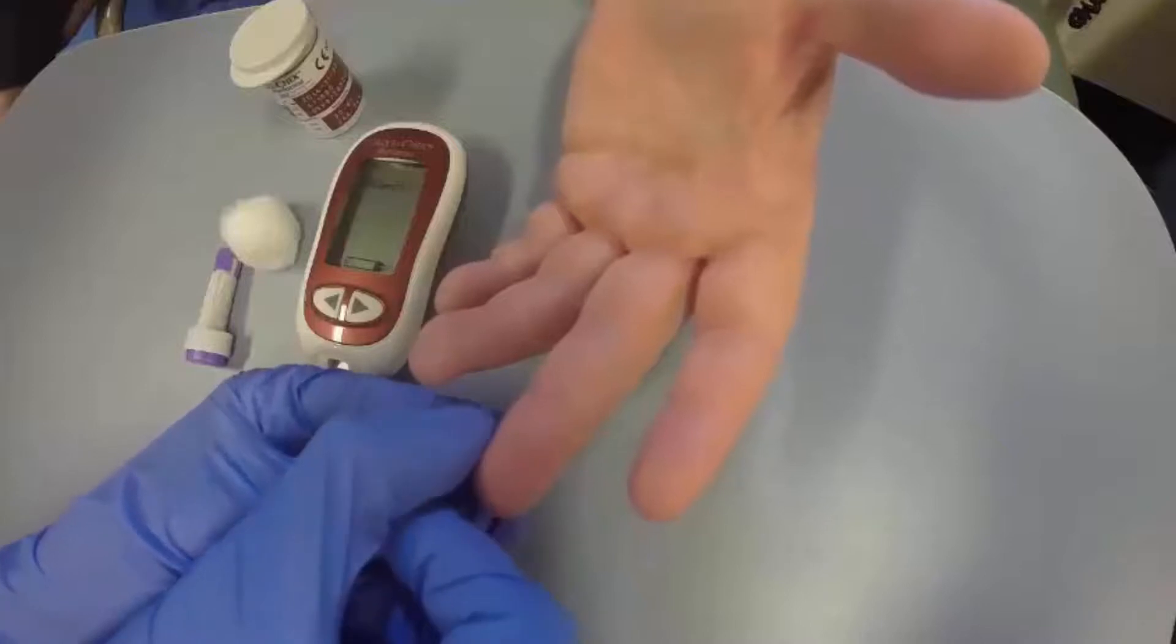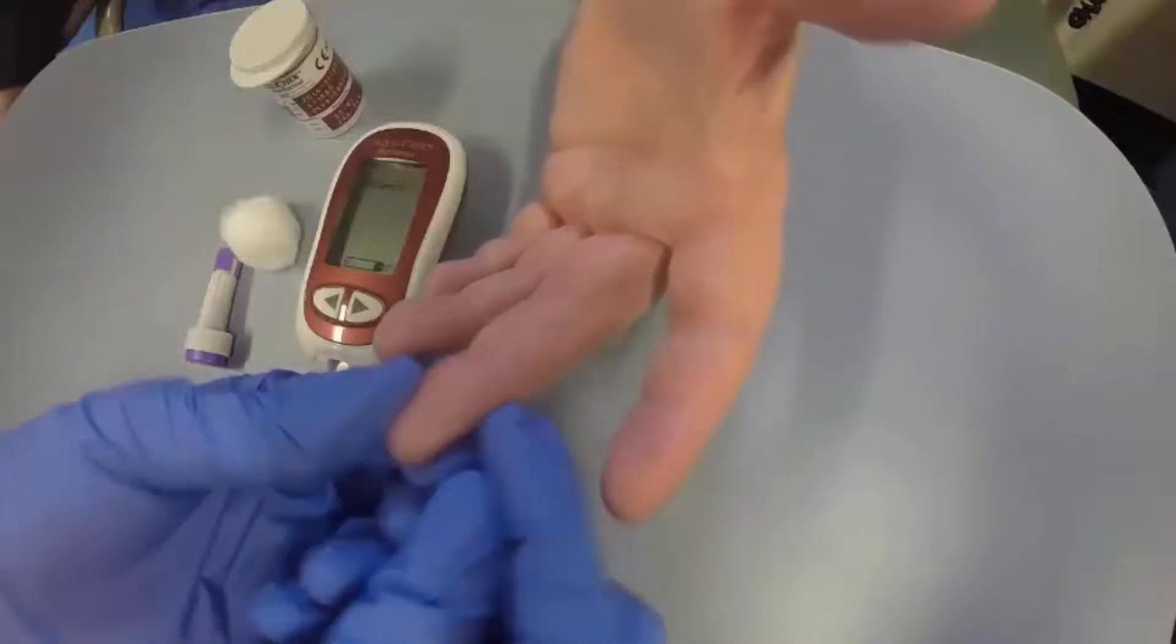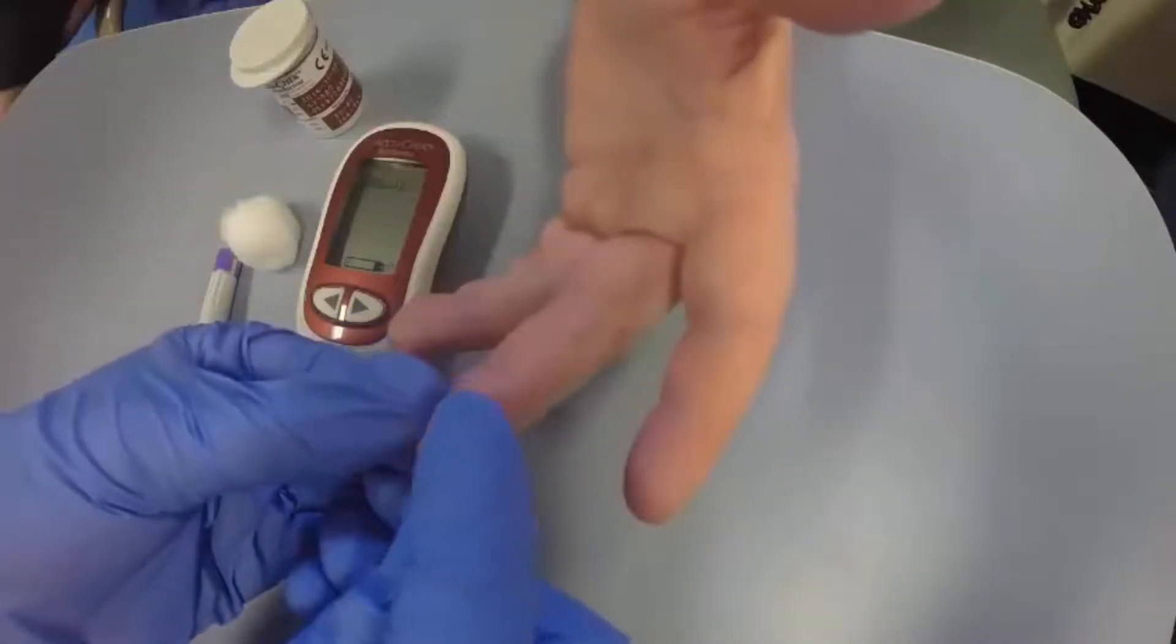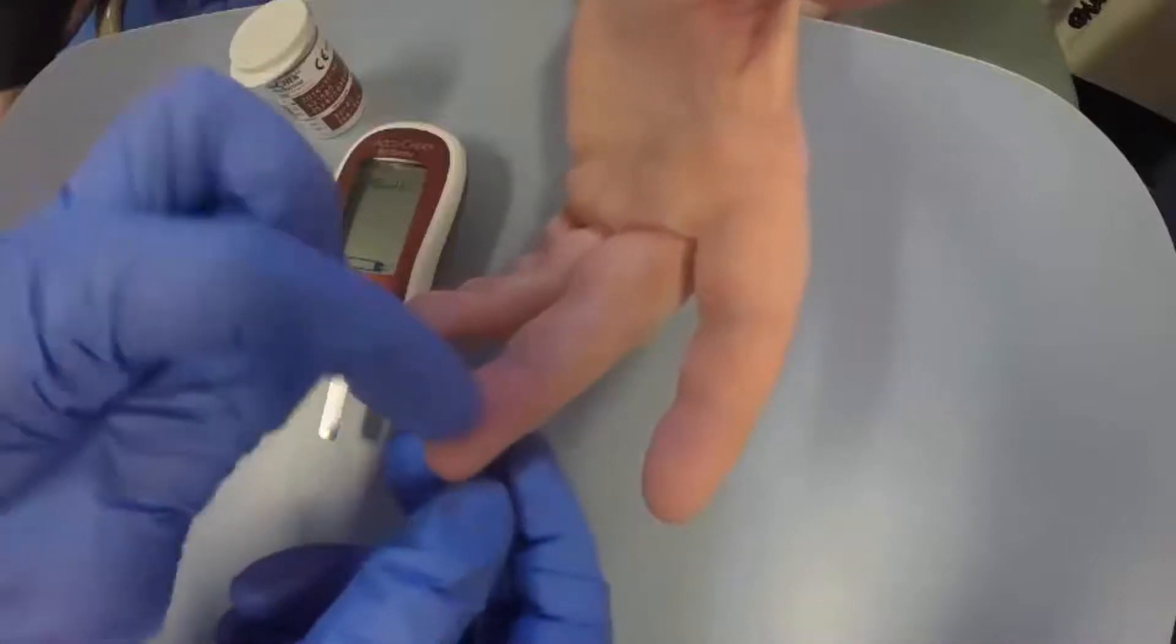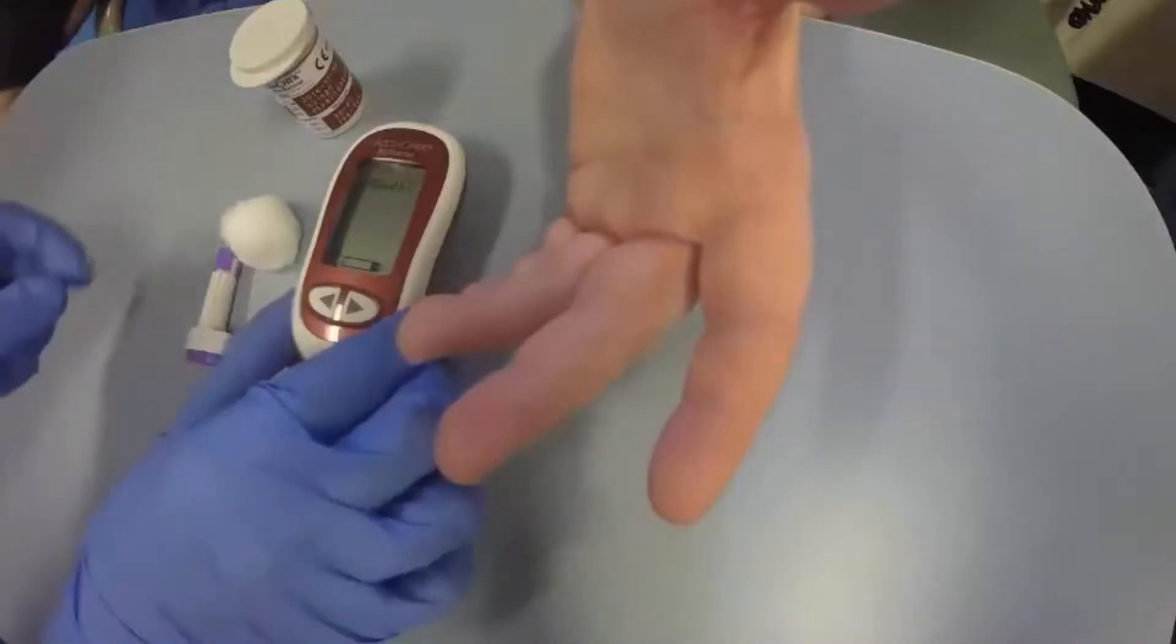When pricking the patient's finger with the lancet, always go on the distal end of the finger, not onto the pads, as this is where the sensitive areas are.